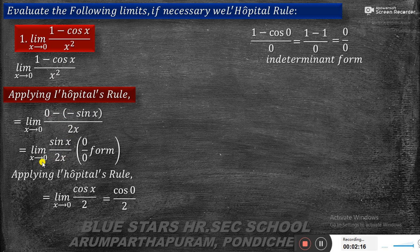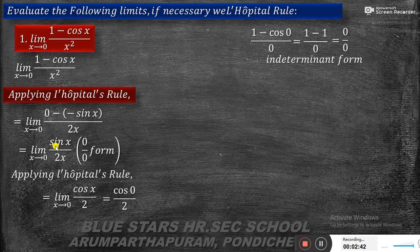So we have: limit x tends to 0, sin x by 2x. Substituting x equal to 0 gives sin 0 by 2 times 0, which is 0 by 0 — again an indeterminate form. Since we get the indeterminate form a second time, we apply L'Hôpital's rule once more.